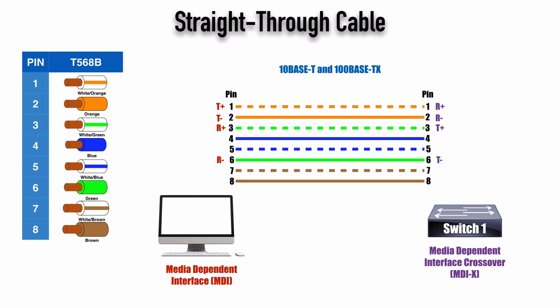Those two types of networks only use two pairs to carry the data. We've got a transmit pair and we've got a receive pair. The transmit pair coming from the PC is made up of pins 1 and 2. The receive pair is made up of pins 3 and 6.